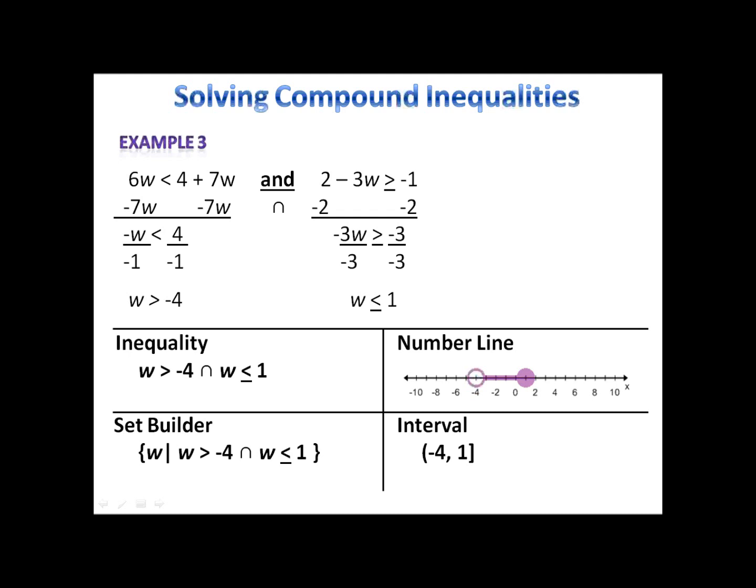Example 3 also has something interesting to talk about because when we have an intersection, we can rewrite the notation using a single sentence. We can put the w in the middle and say negative 4 is less than w which is less than or equal to 1, or w is between negative 4 and positive 1. I could also use that rewritten inequality in my set builder notation.